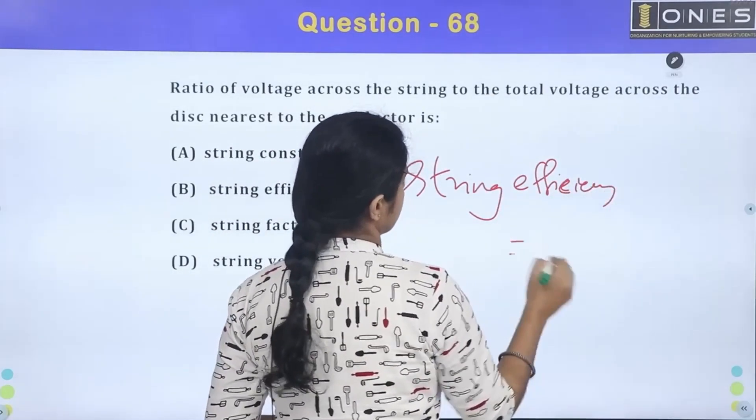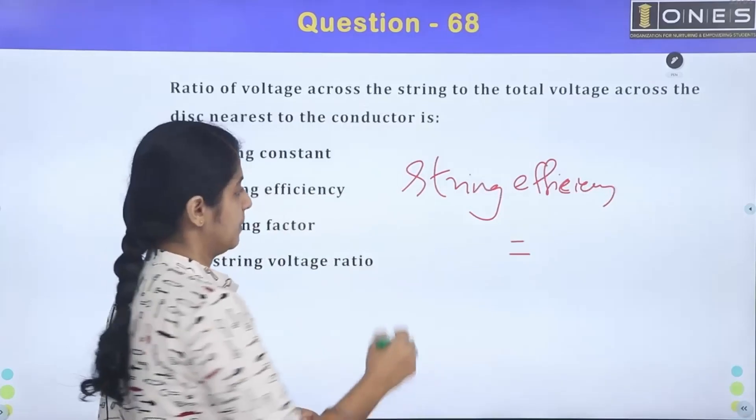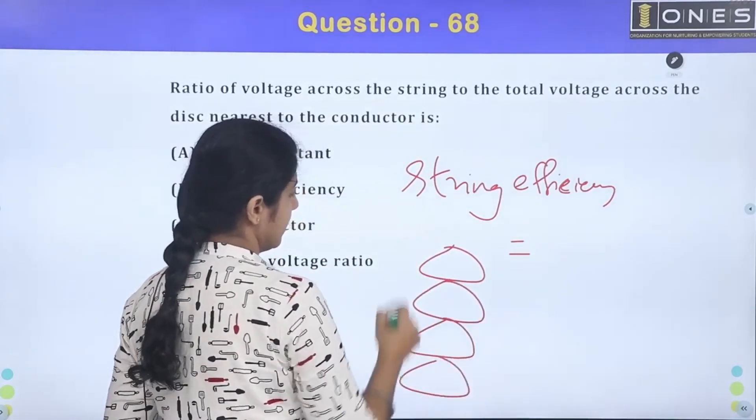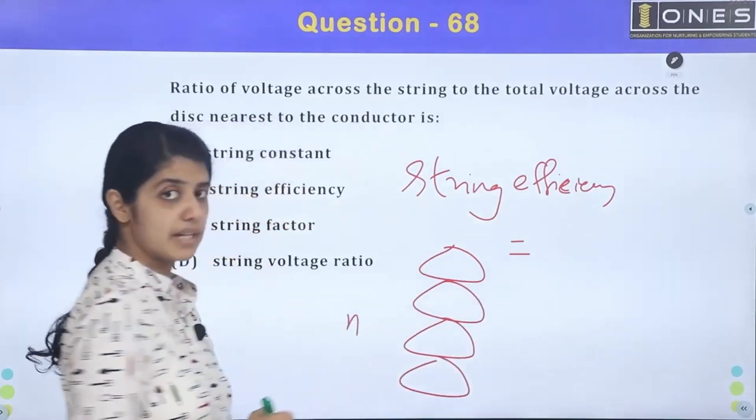What is string efficiency here? We have the insulator, there is a little disc. There is a little disc. What is the number N on the disc?